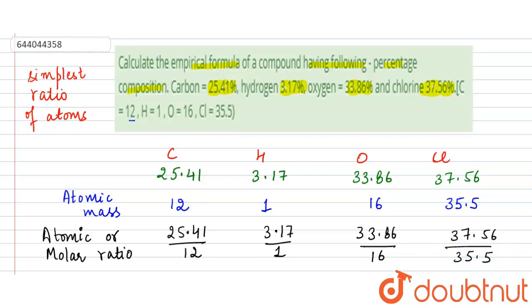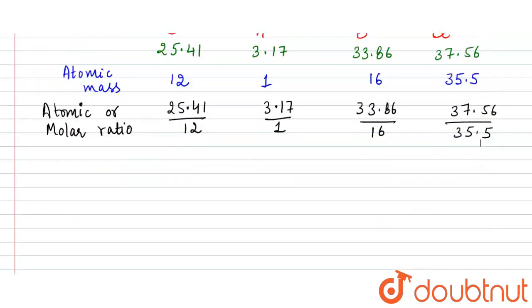Now if we calculate these values, here we will have this equal to 2.11, this is 3.17, here we have 2.11, and here we have 1.05. For the empirical formula we need the simplest ratio. Here our smallest one is 1.05 and we have atomic or molar ratio for each element.